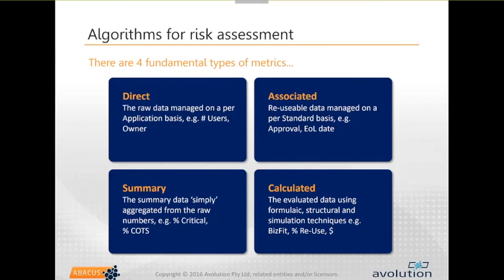There are just direct metrics - survey-based ones or ones pulled from a third-party repository. They're things like number of users - just a number or a pick list, something chosen as a direct measure. Then there are what we refer to as associated measures - you take one of those direct measures but associate it or reason about it in a different part of your business. For example, you might know the end of life date for a standard - that's a direct measure on a standard. But the fact that standard is associated with an application means you can infer the end of life date for that application - that's an associated measure. In TOGAF there's the whole standards information base, the SIB - this is a pretty classic application of associated measures.